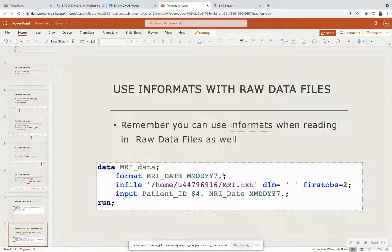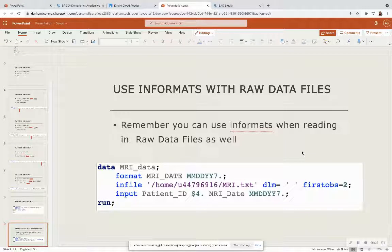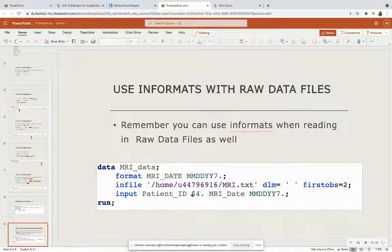So I can also use these informats when I'm reading in raw data files. In this case, I'm reading in a raw text file. I'm going to put the link to this text file in the description below. And in my input, I have the patient ID, which I'm utilizing as a character. Even though the ID appears as a number, that number is not used for mathematical operations.